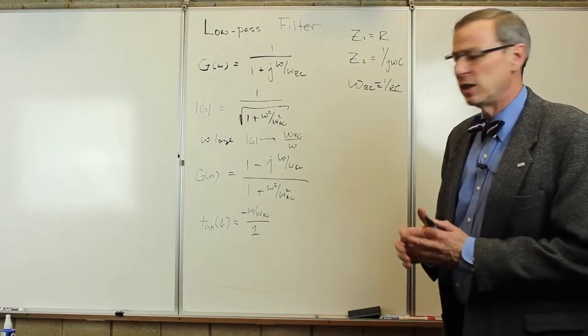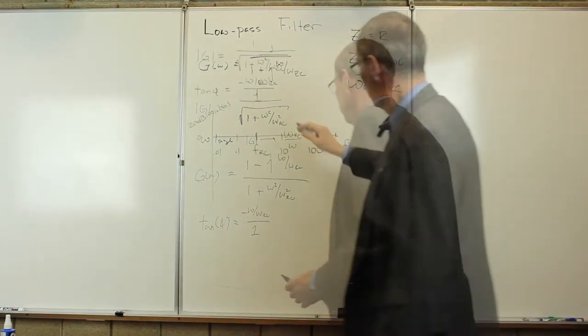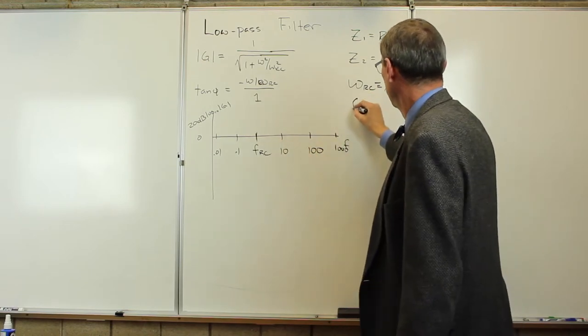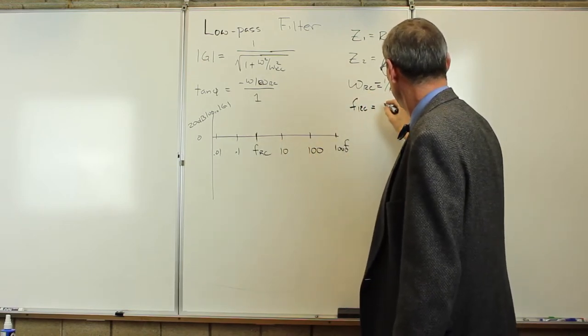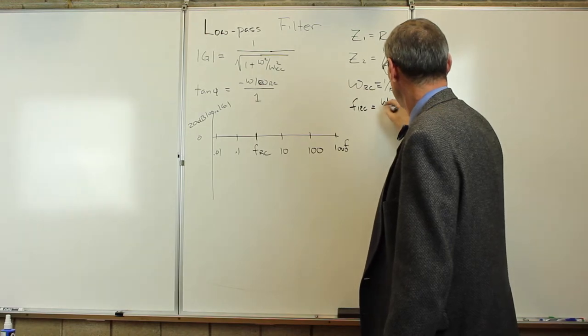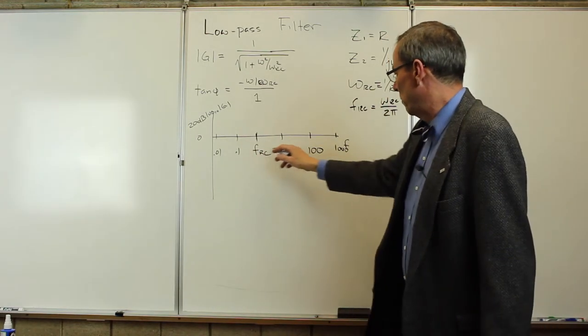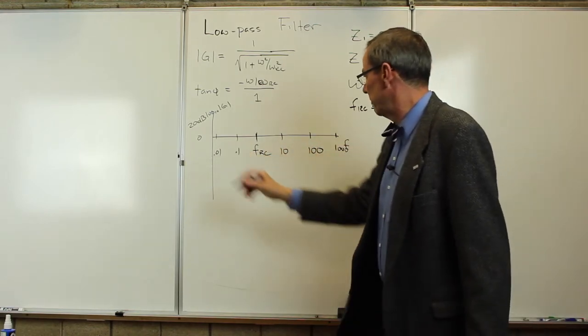Let's now take a second and look at those on a Bode plot. We'll plot it in terms of FRC, where FRC is omega RC over 2 pi. And it's on a log scale, so power of 1, 10, 100, 1,000, fractions.